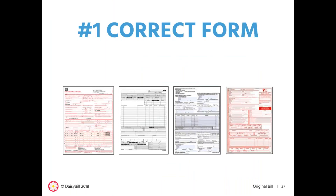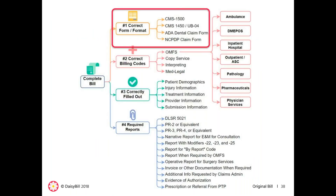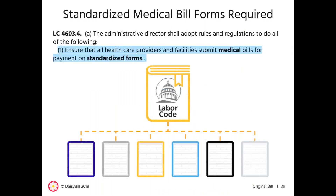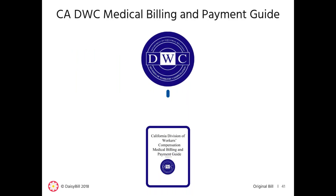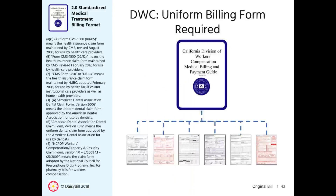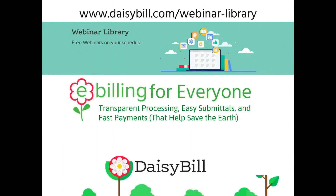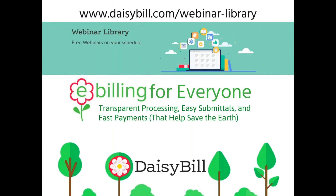Let's start by looking at the correct designated billing forms. Labor Code 4603.4 requires healthcare providers to submit medical bills for payment on standardized forms. The DWC regulations include the California DWC Medical Billing and Payment Guide. Section 2.0 directs that all medical bills shall be submitted on uniform billing forms, listing the required billing form for each type of healthcare service. For electronic billing, which claims administrators must accept, there is a separate set of required electronic formats — we have a whole webinar on this topic available from our webinar library.